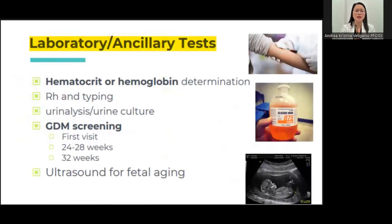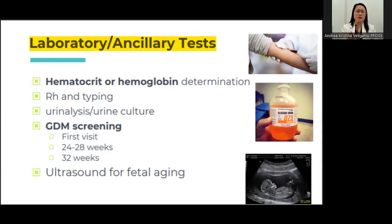Together with prenatal care, laboratory and ancillary tests are essential. You have to do blood tests to know if your patient is anemic, check platelet count, and determine blood type. Urinalysis is also done — the gold standard is urine culture, but in a low-resource setting, urinalysis is acceptable. Screen for gestational diabetes mellitus (GDM): if the patient is high risk — obese or with a strong family history of GDM — screen at the first visit using a 75-gram oral glucose tolerance test. For low-risk patients, you can start screening at 24 to 28 weeks, and again at 32 weeks if there is suspicious weight gain or a large baby.